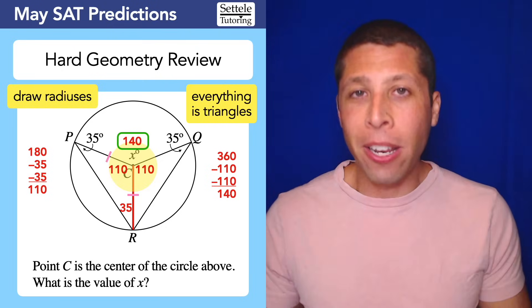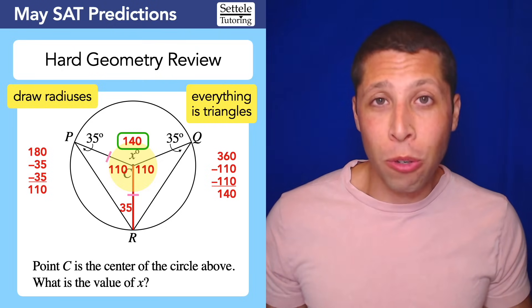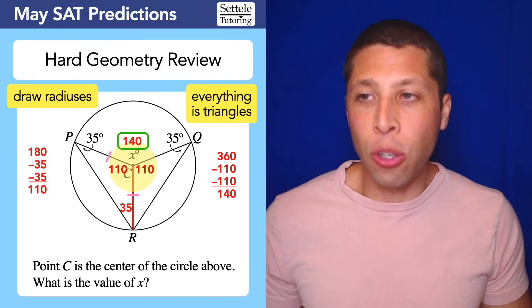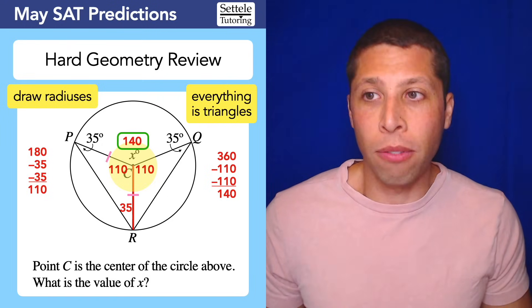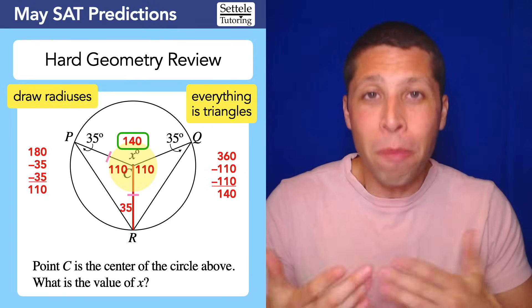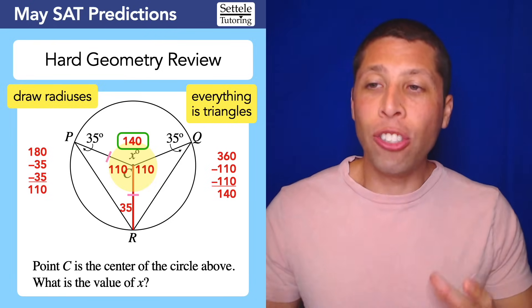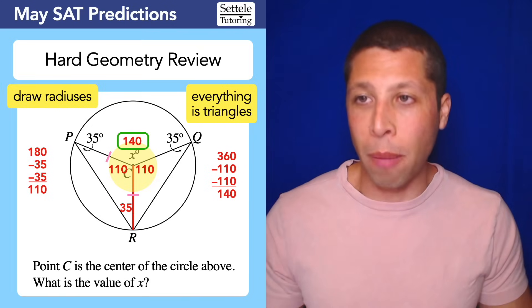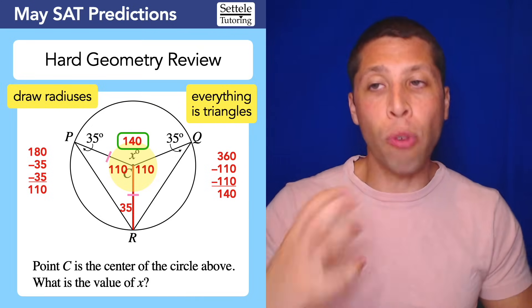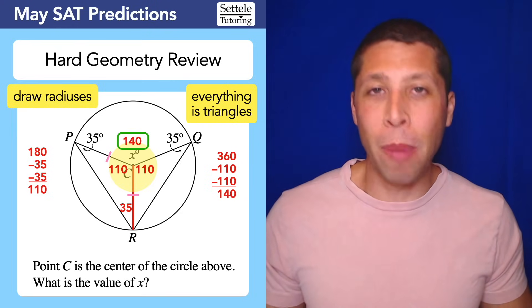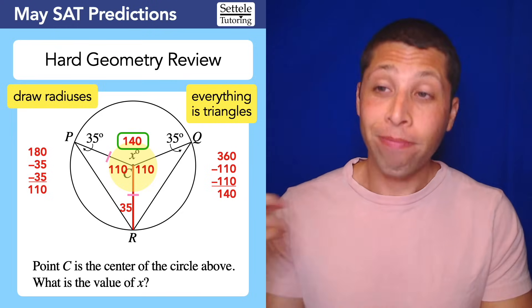This question looked completely different from anything you've probably seen before, but at the end, what did we really need? We needed: there are 360° in a circle, and 180° in a triangle. Those are basic geometry ideas. It's just that you might not have known you were going to use them. But if you have the moves of drawing radiuses and thinking about triangles, you'll get back to the basic rules that you're more familiar with.